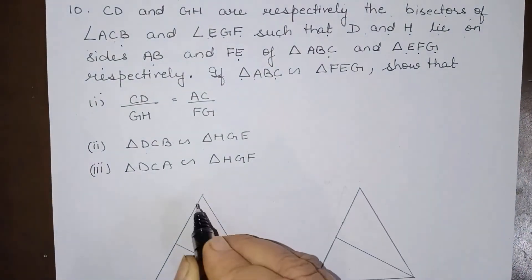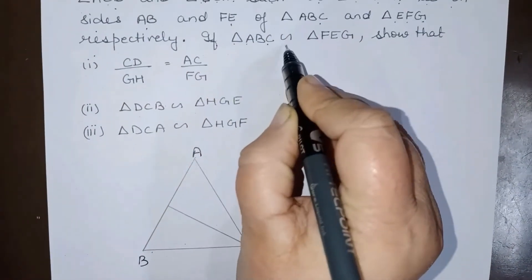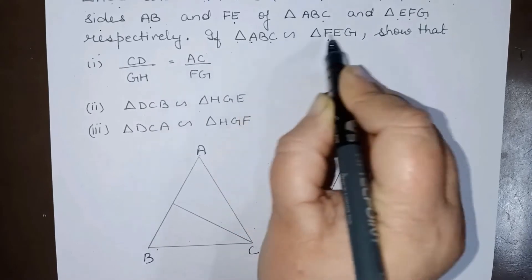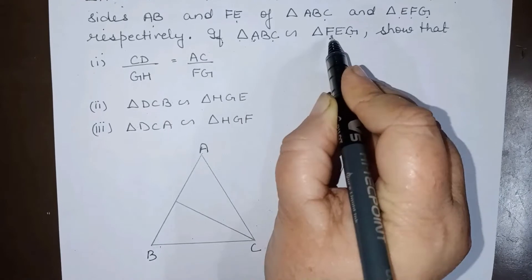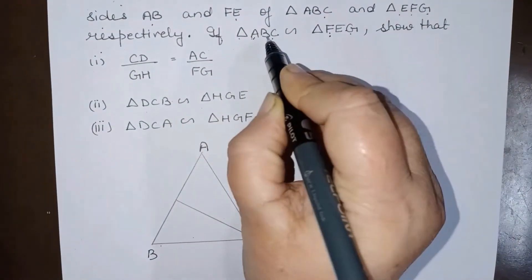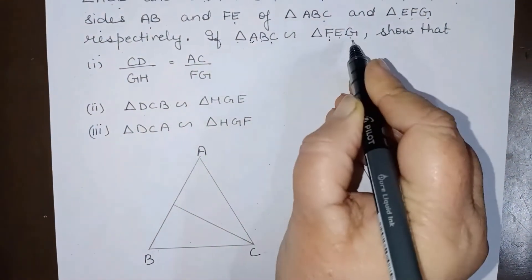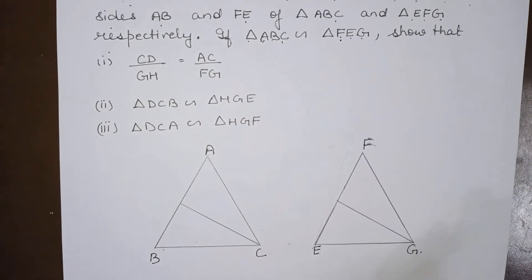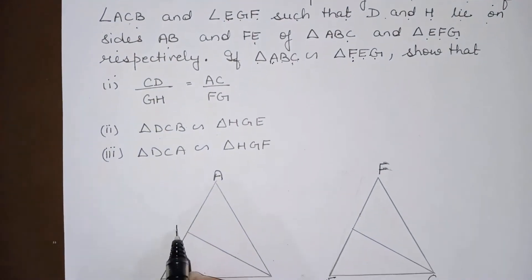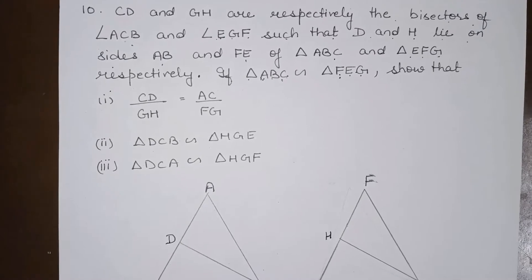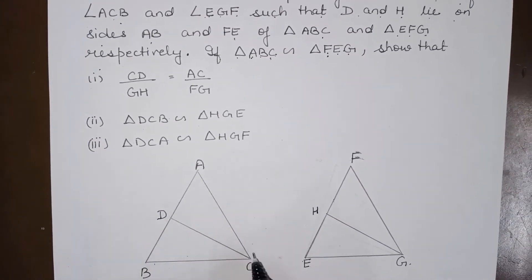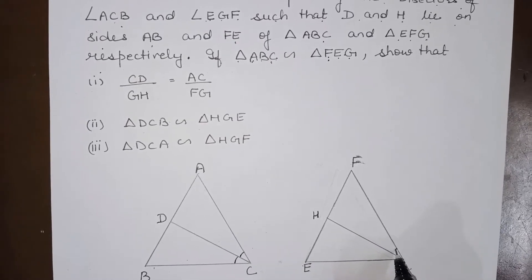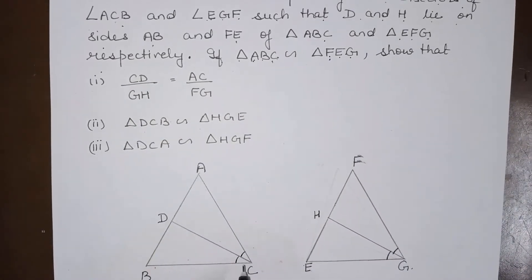If triangle ABC is similar to triangle FEG, then since corresponding angles are equal, angle A equals angle F, angle B equals angle E, and angle C equals angle G. CD is the bisector of angle ACB and GH is the bisector of angle EGF, meaning each bisector divides its angle into two equal parts.